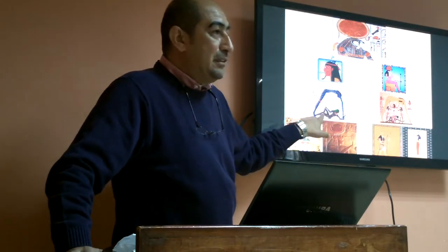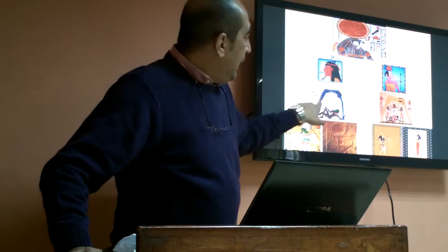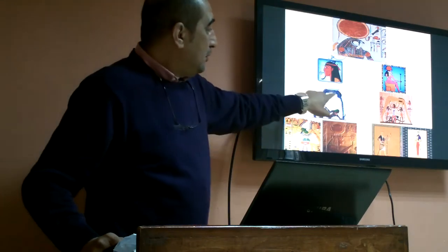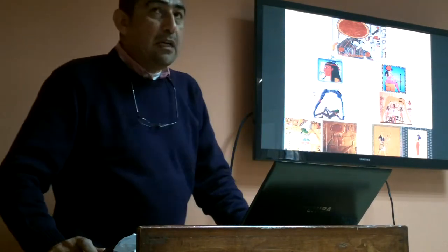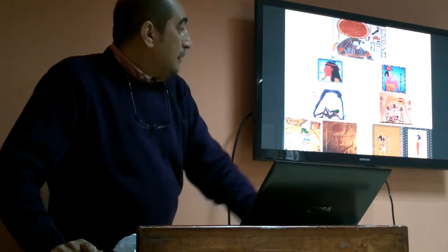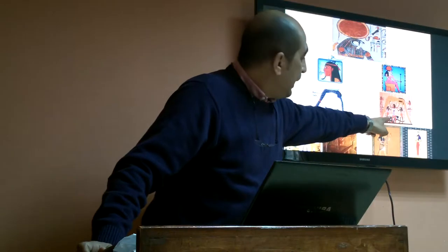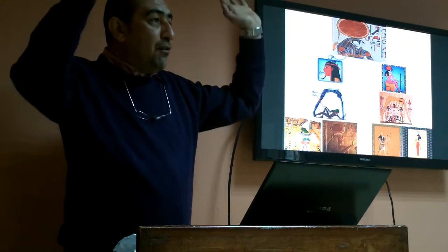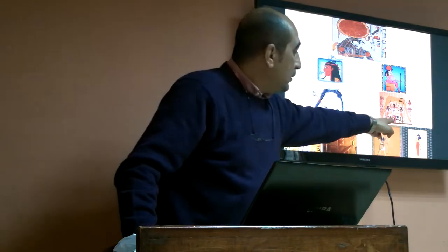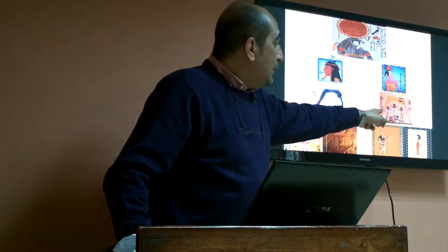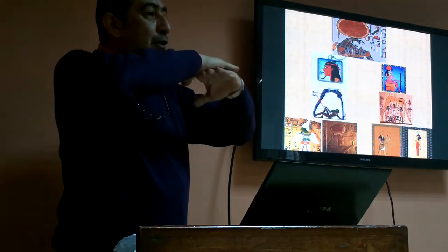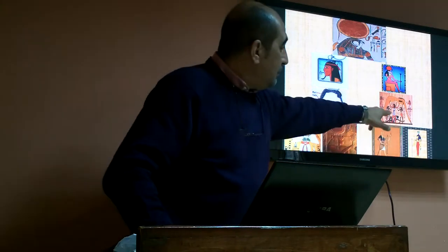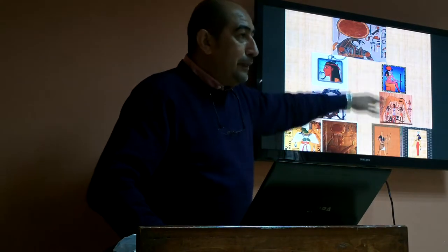Her husband, god Geb, is laying down on the floor, and she has the figure of the dark navy-blue sky with stars. Here is another picture from the tombs of the Valley of the Kings — we can see a man standing as if he's holding or lifting the body of goddess Nut, trying to split her up from her husband Geb who is laying down on the floor. The legend tells us that when they were attached to each other forming one body at the beginning of creation, god Shu split them to create a space between them.